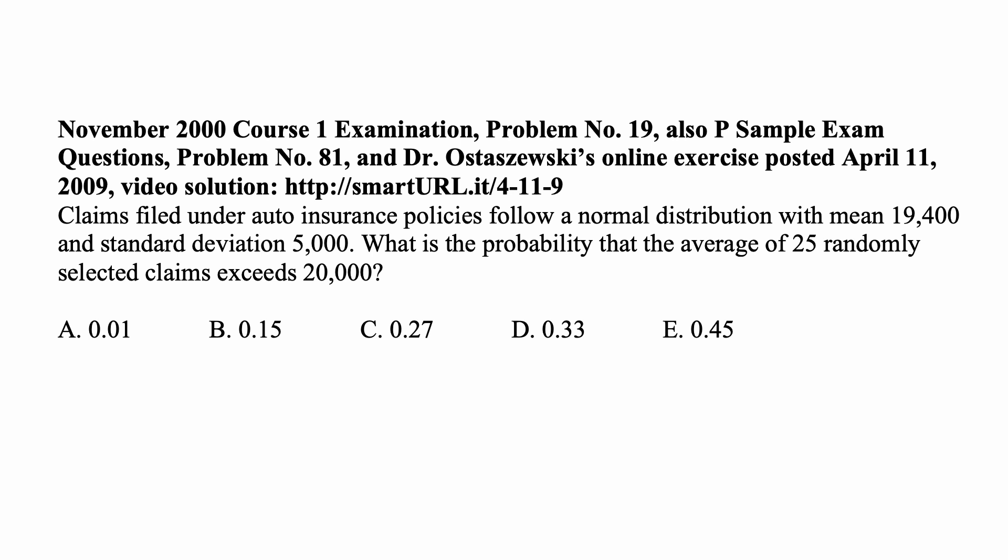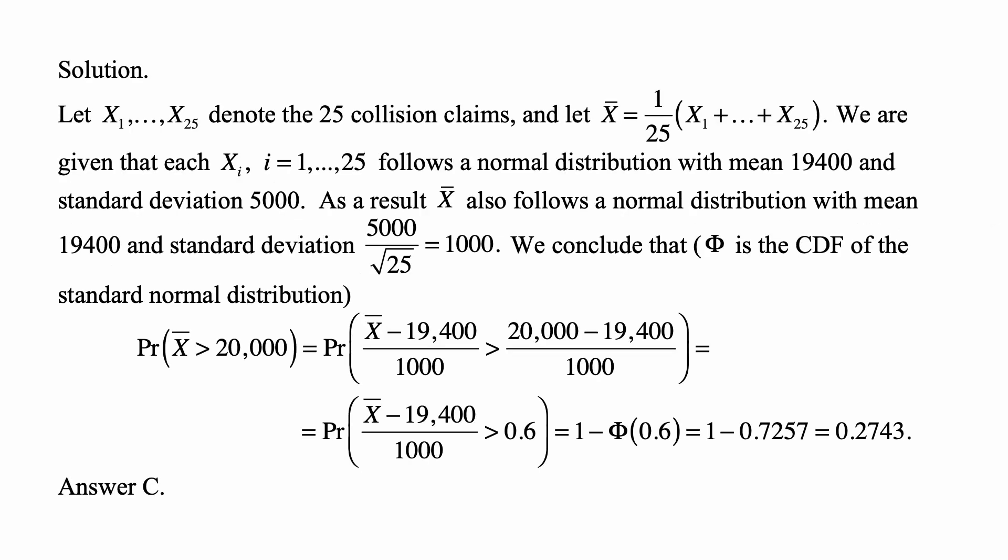Let's look at the solution. Let x₁ through x₂₅ denote 25 collision claims, and we take their average, the sample mean. That's x-bar equal to 1 over 25 times the sum of x₁ through x₂₅. So it's the sum of all 25 claims divided by 25, and that's the sample mean.